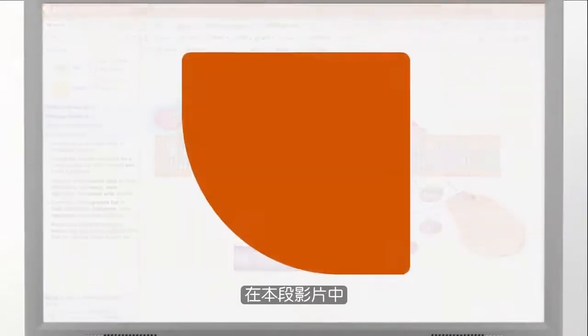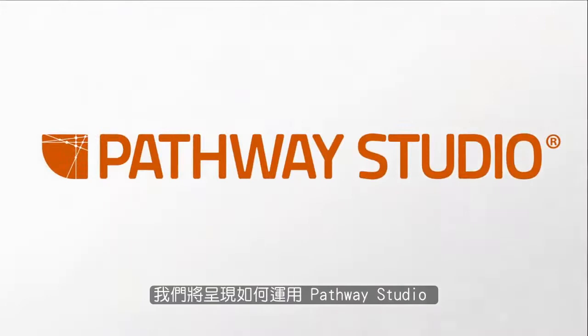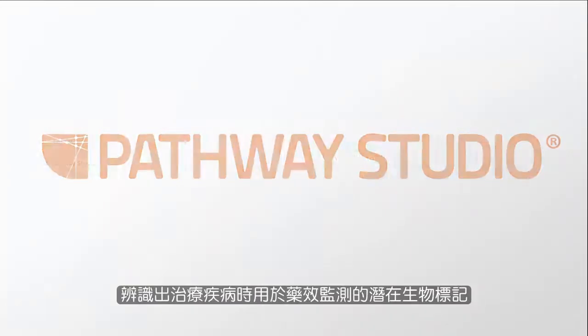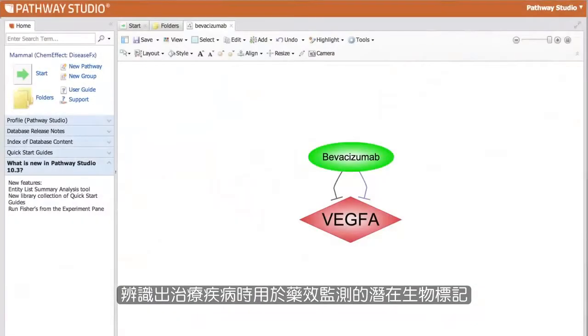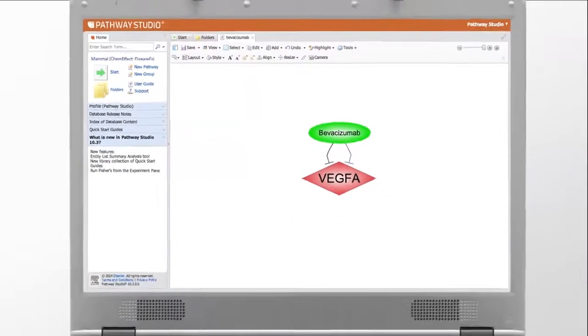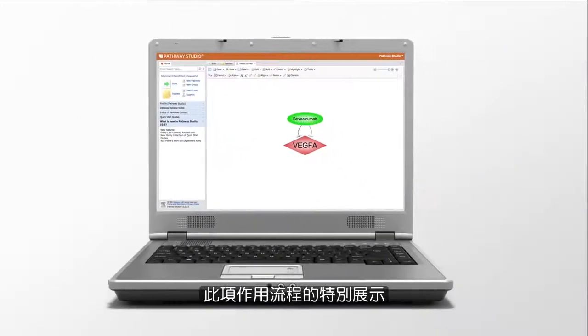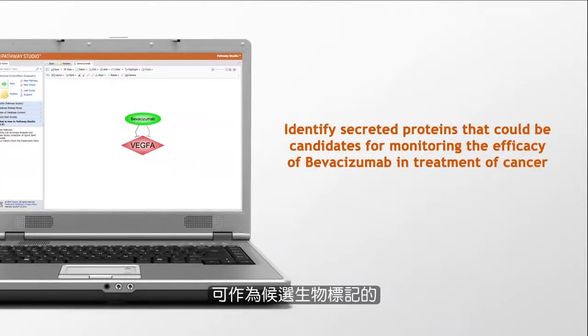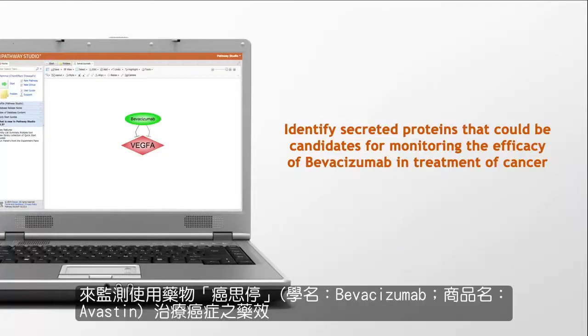In this video, we will demonstrate how to use Pathway Studio to identify potential biomarkers for drug efficacy monitoring when treating a disease. Specifically, this workflow will demonstrate the identification of secreted proteins that could be candidates for monitoring the efficacy of Bevacizumab, an anti-VEG-FA molecule in the treatment of cancer.